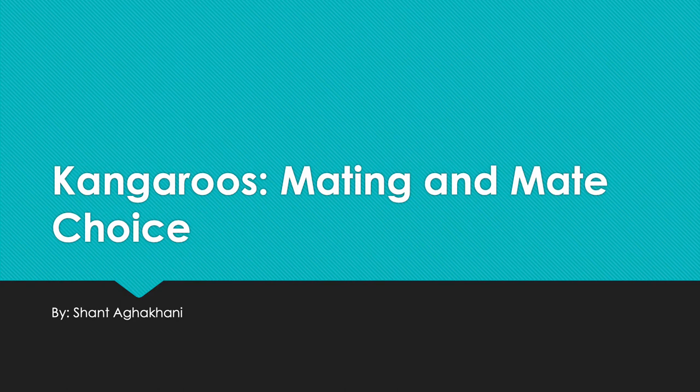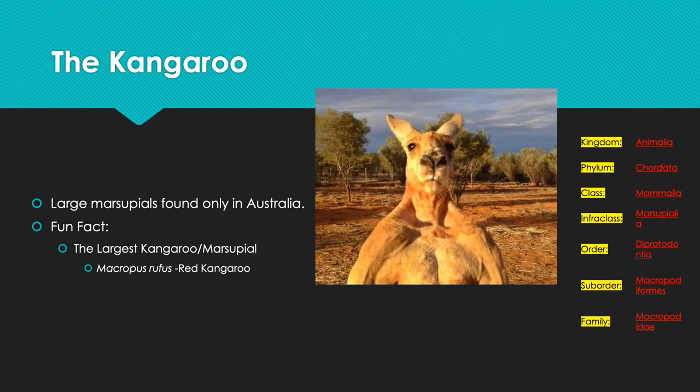The kangaroo is a large marsupial found only in Australia. They are part of the kingdom Animalia, phylum Chordata, class Mammalia, infraclass Marsupialia, order Diprothodontia, suborder Macropodiformes, and family Macropodidae.